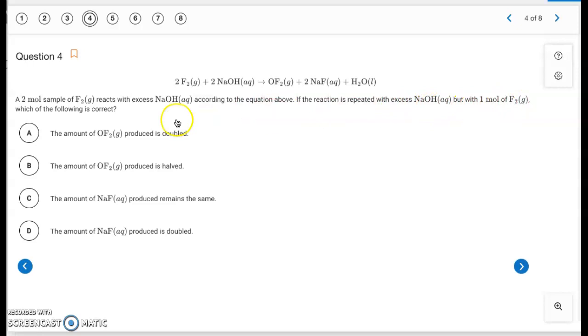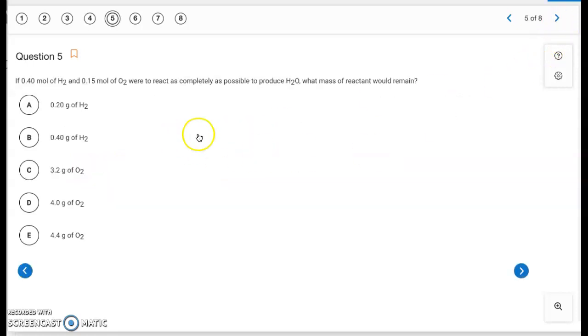So we still have excess NaOH, but now we're taking two moles of F2, and you're cutting it down to one mole. So you have half of your limiting reactant, so you should end up getting half of each product that's produced. So we can look at our choices here. It'd be letter B. OF2 produced is halved. The rest of them talk about doubling or remaining the same. This is the only one that cuts the amount of product in half.